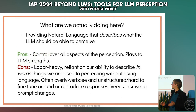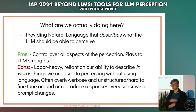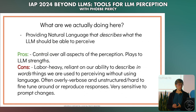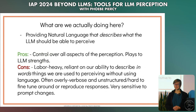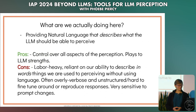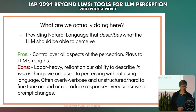So what are we actually doing here? We're providing natural language that describes what the LLM should be able to perceive. This gives us control over all aspects of the perception because we are doing the perception and just telling the LLM what it has. It plays to LLM strengths since they're trained on huge corpora of descriptive text. The cons: it's labor-heavy, entirely manual, relies on our ability to describe in words, overly verbose, unstructured, and very sensitive to prompt changes. It's not a good engineering solution for providing perception.